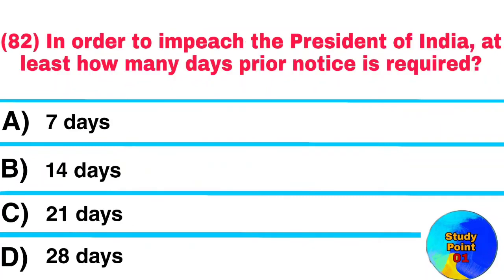Question No. 82. In order to impeach the President of India, at least how many days prior notice is required? Answer: 14 days.